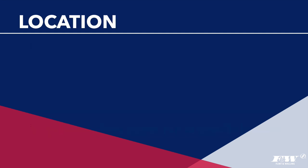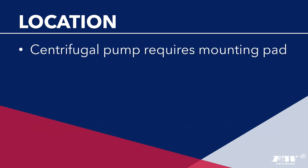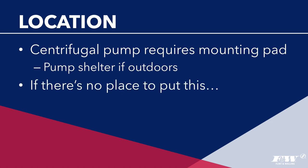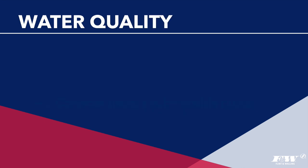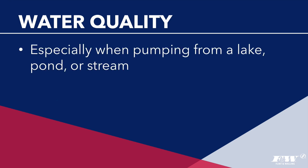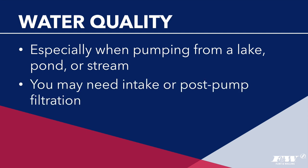The location of the pump is also something to consider. A centrifugal pump will require a mounting pad and pump shelter if installed outdoors. If there isn't a suitable place or if these structures are undesirable, you may consider choosing a submersible pump even if a centrifugal pump would work for the application. The final detail to consider is water quality, especially if pumping from a lake, pond, or stream — this may require intake or post-pump filtration, which could factor into your system calculations.